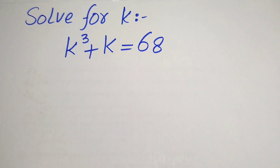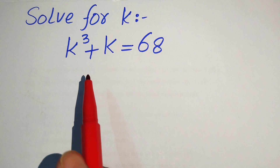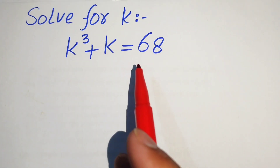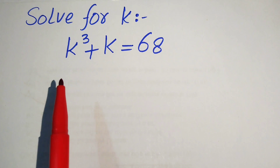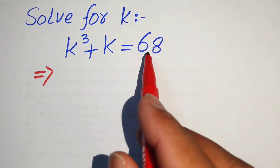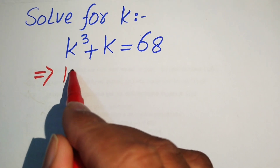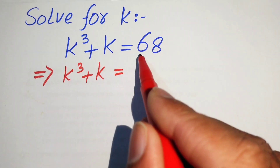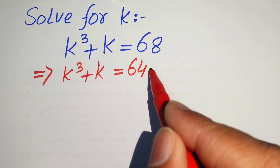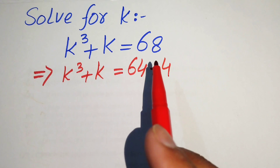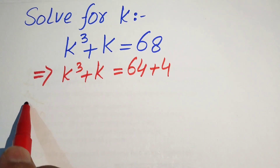Hello everyone, welcome. We solve this nice Math Olympiad algebra problem. We have a cubic equation: k cubed plus k equals 68. To begin, we focus on the right-hand side and write 68 as 64 plus 4.